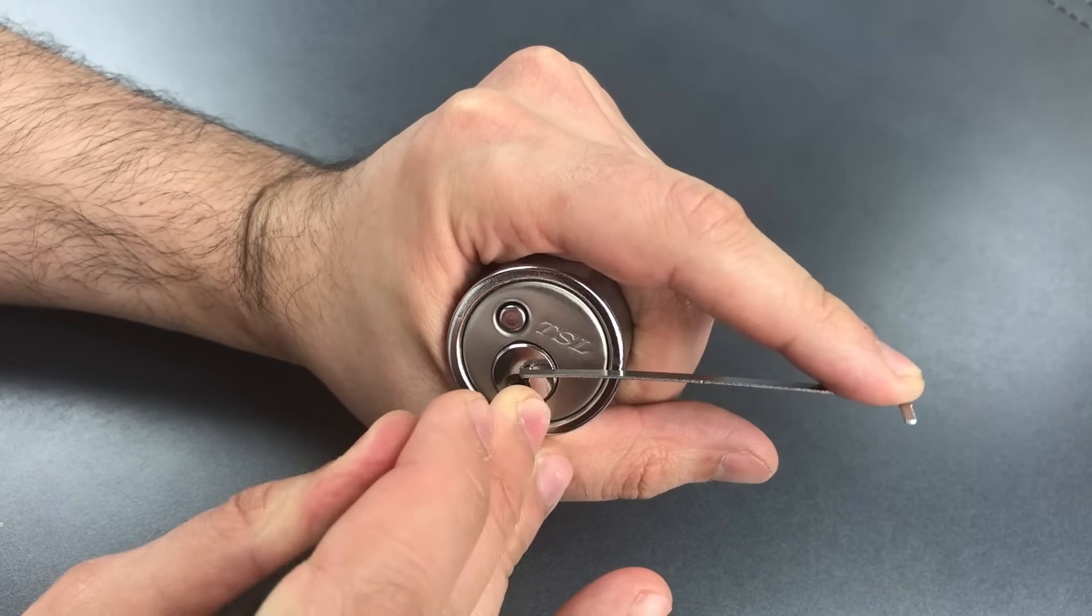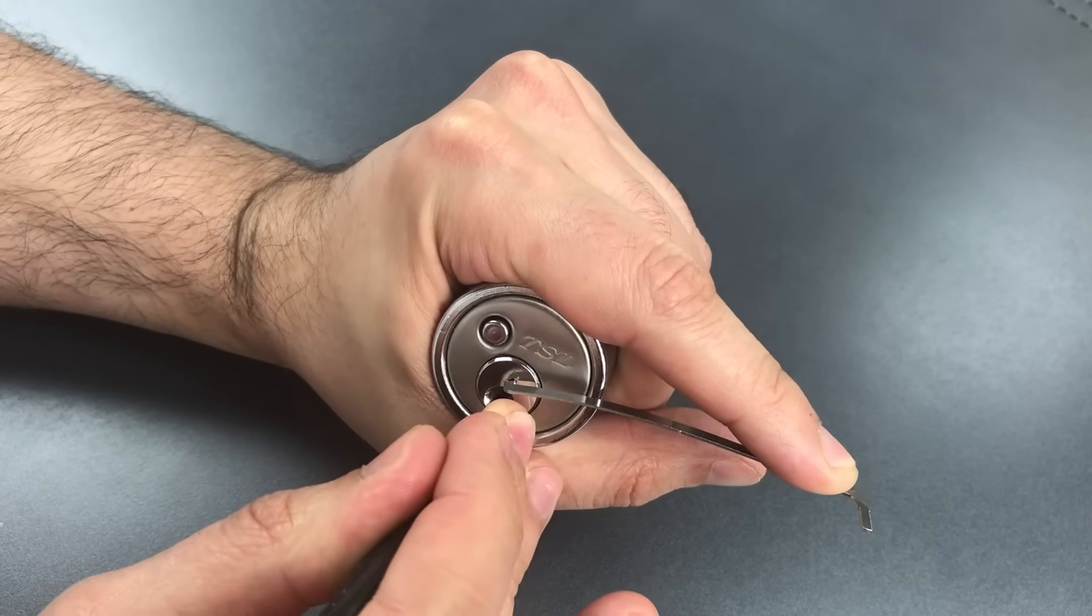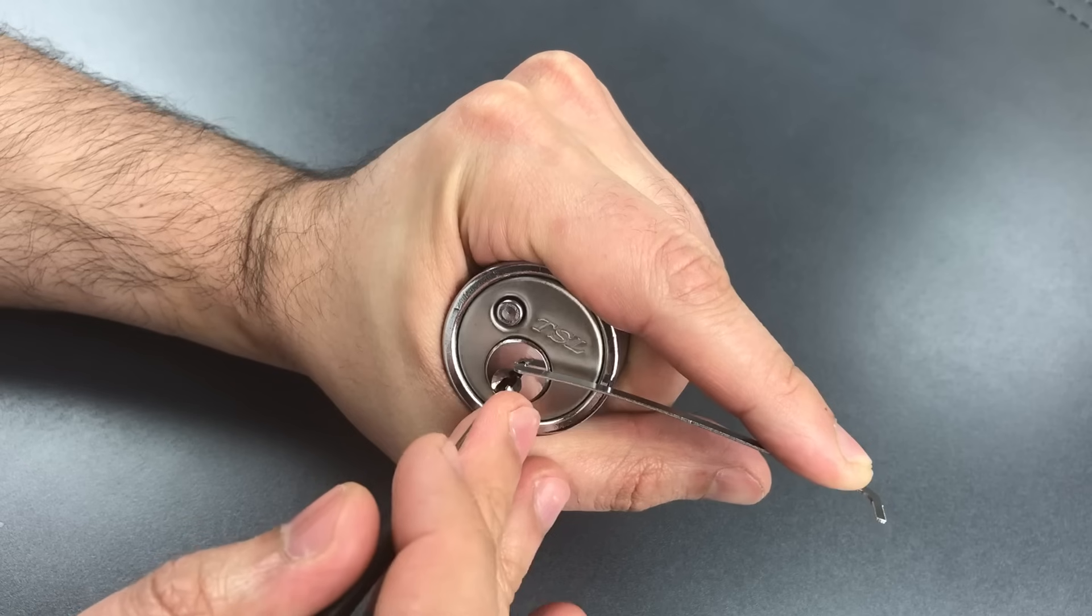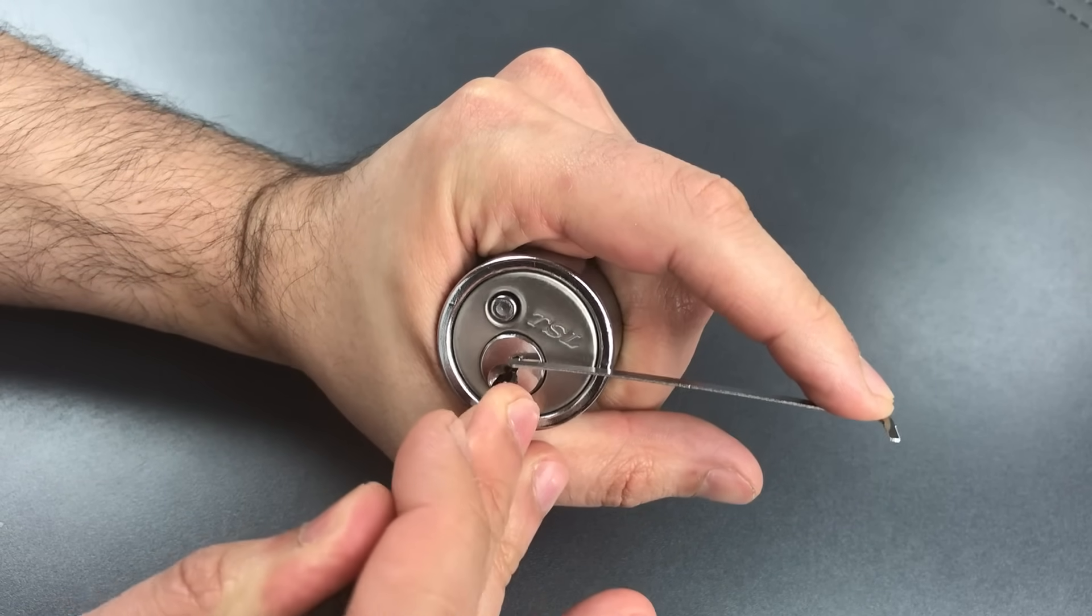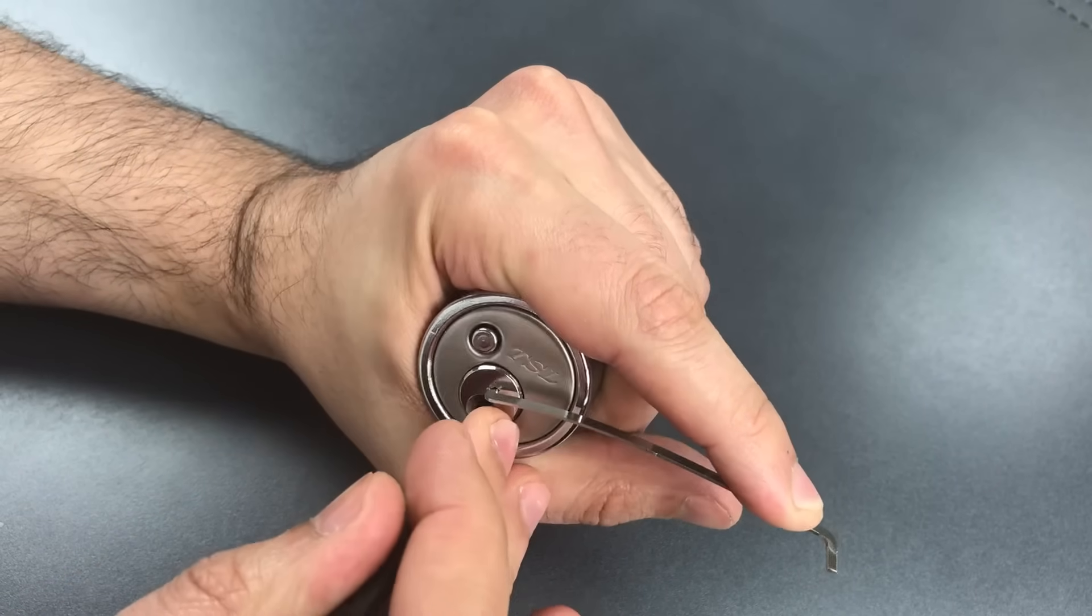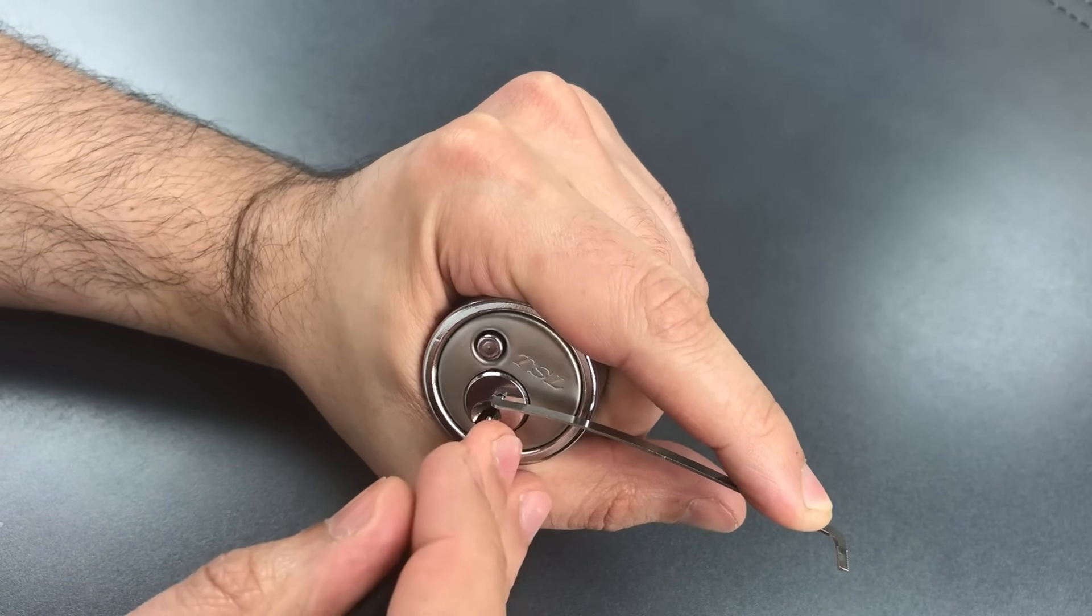I think five is binding a bit. Got a click out of him. Hit six, and we just dropped into a false set. Counter rotation on one. Nothing on two, three,